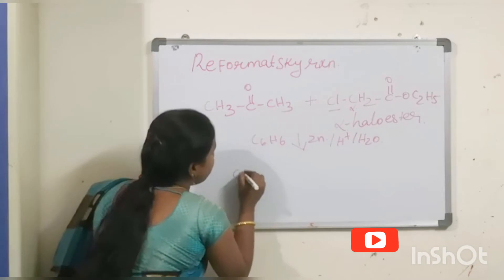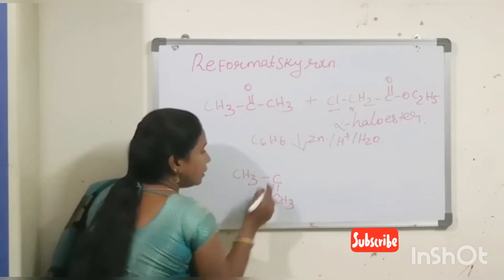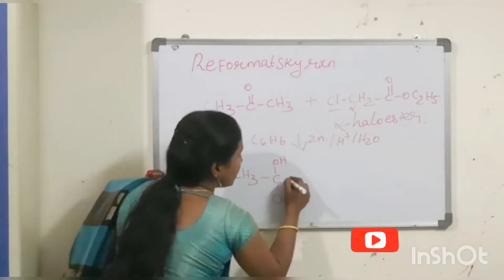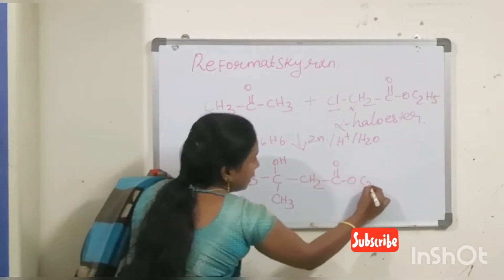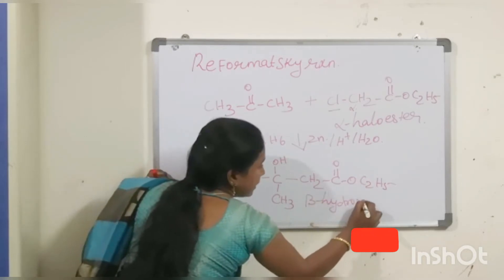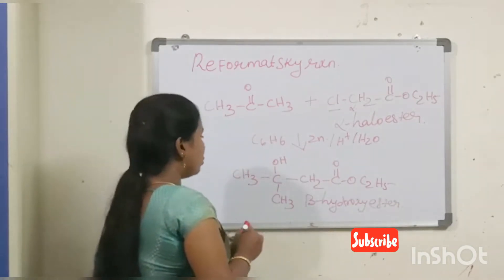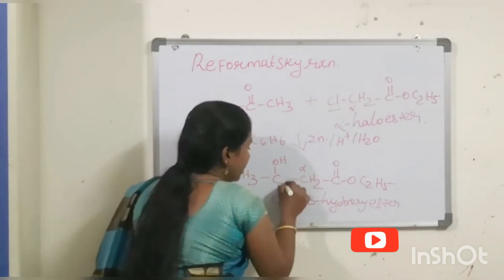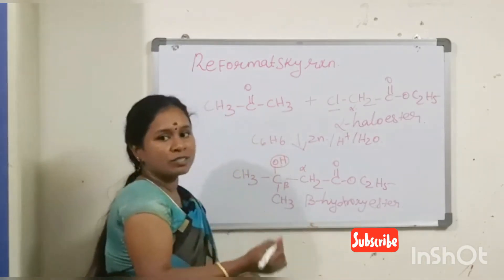Looking at the structure: acetone (CH₃–C(=O)–CH₃) reacts, and the OH group is introduced. Chlorine leaves. The product is a beta-hydroxyester. The ester functional group is at one end; the alpha carbon is next, and the beta position carries the hydroxy group — so it is a beta-hydroxyester.